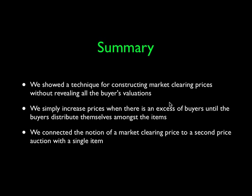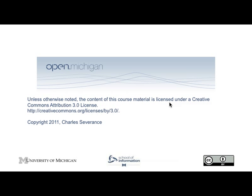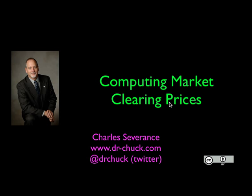In summary, we've shown a technique for constructing ideal market clearing prices without revealing buyers' valuations. We simply let people pick what they want, and when there are too many buyers, we increase the price slowly — only moving the price up to the point where buyers just drop away. We also connected the notion of a market clearing price to a second price auction with a single item. This material is copyright Creative Commons and you're welcome to reuse it. Thanks for listening — this is Dr. Chuck.